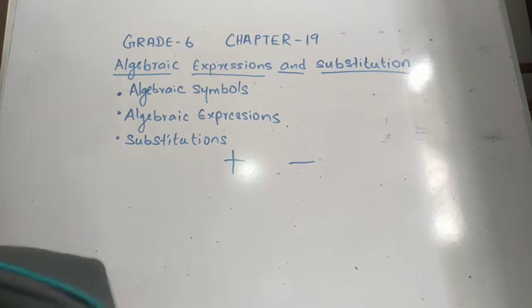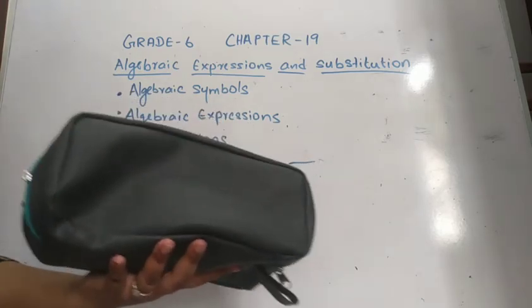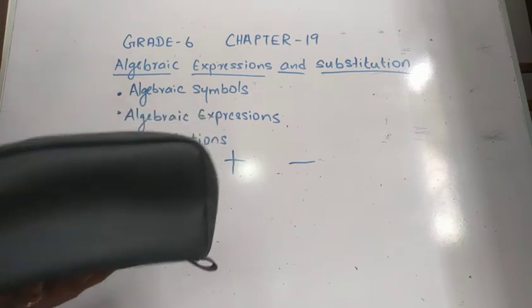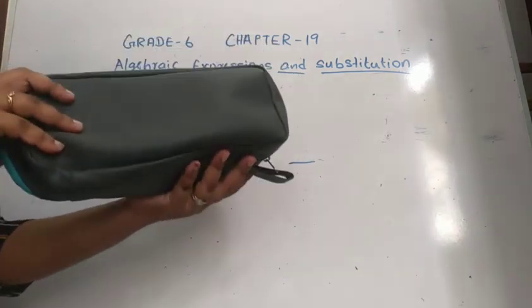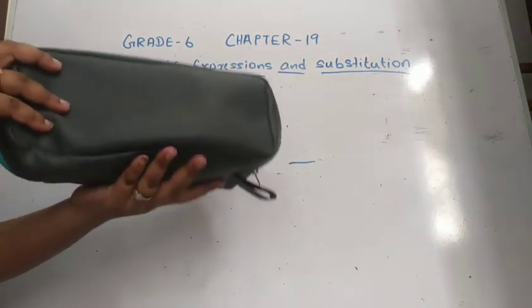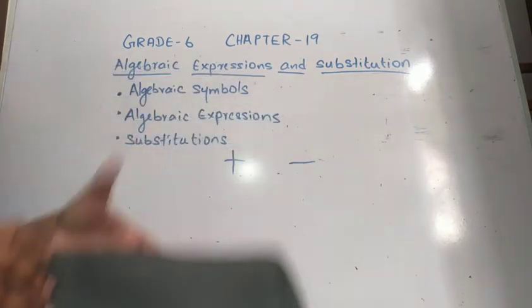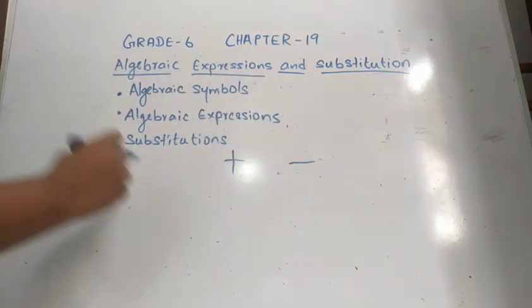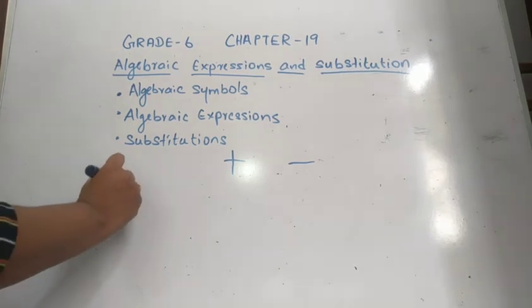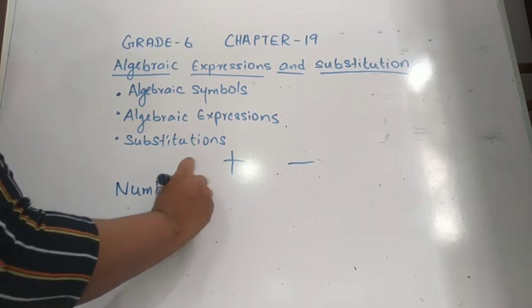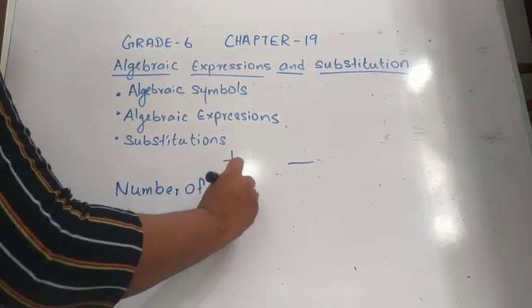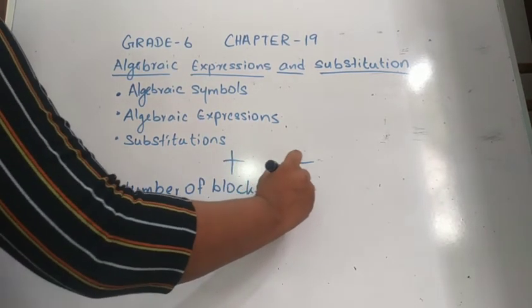Algebraic Symbols are used in order to illustrate an unknown number. I will give you an example for that. This is a non-transparent bag. I have kept few blocks inside this bag. You all don't know the number of blocks inside this bag. To denote the number of blocks, number of blocks inside this bag, I am going to use the alphabet symbol A.